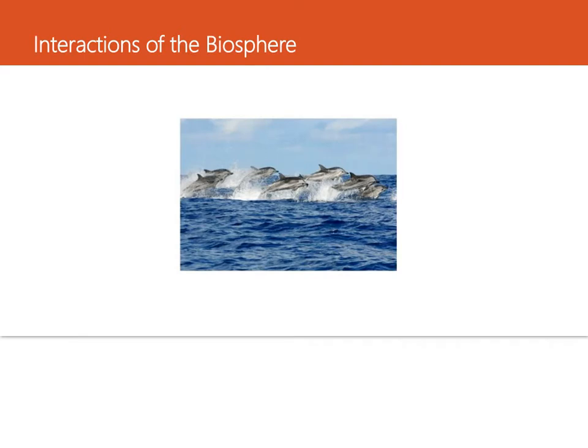So the biosphere and hydrosphere interact when a body of water, such as the ocean, provides a location and other resources for an ecosystem to exist within. Also when animals release moisture into the air by breathing or sweating, this is an interaction between the biosphere, the atmosphere now, and the hydrosphere. So dolphins living in the ocean represent an interaction of the biosphere and the hydrosphere.